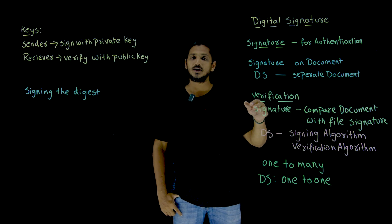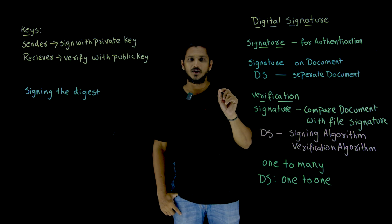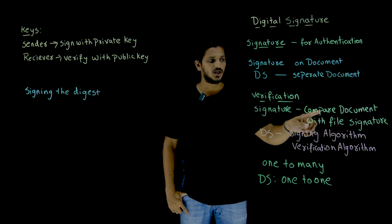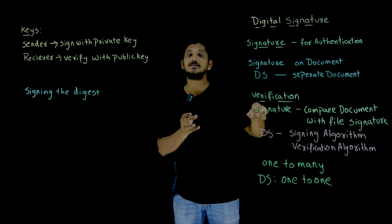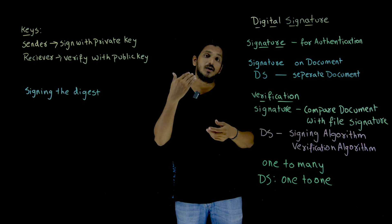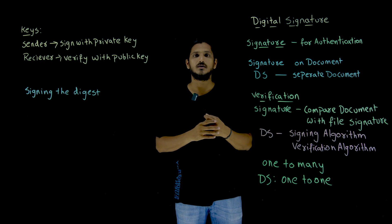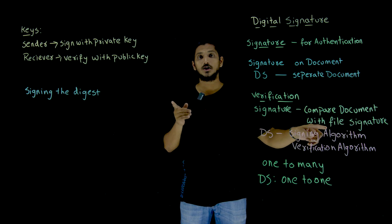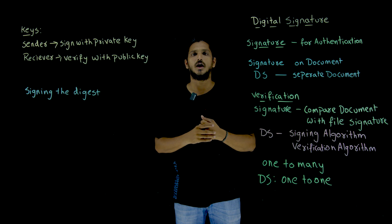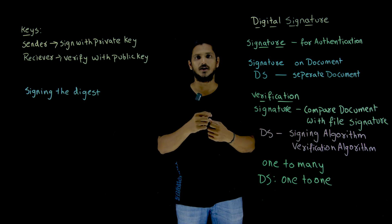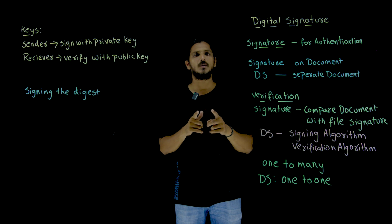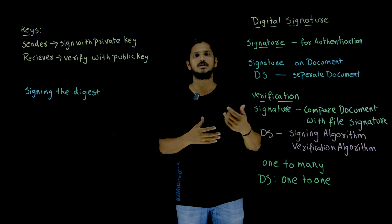Next is verification. How is verification done? Suppose you signed a bank check and the document is sent to the bank. The signature you made on the document is compared with the existing file — the bank has your signature from when you opened the account. So the check signature is verified against the file signature you provided during account opening. If it matches, it is authenticated; otherwise it is not authenticated.